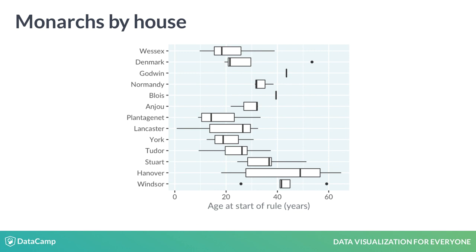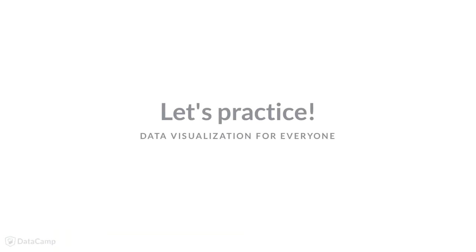The Anju house only had three kings, and forms a box with one whisker, not two. Notice that the box plots for the houses of Denmark and Windsor show some points. These are extreme values — that is, values that are outside the range of the whiskers. Windsor's leftmost outlier is Elizabeth II, who ascended at age 26. Let's draw some box plots.